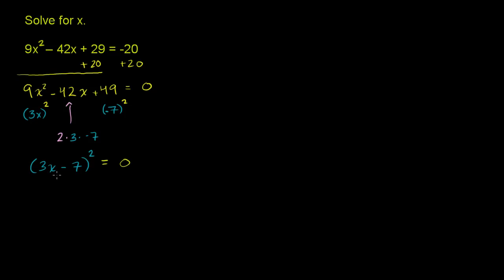Now we essentially only have one expression equaling 0, times itself. So the only way that equals 0 is if that expression equals 0. So 3x - 7 = 0, and now we can solve for x.